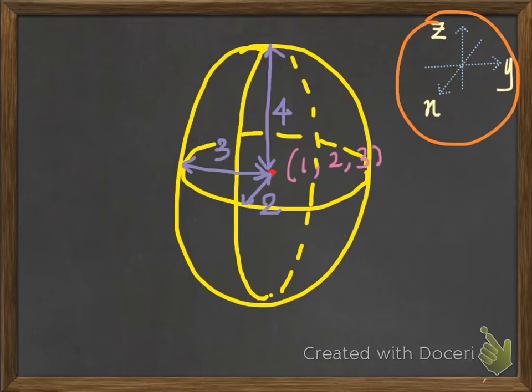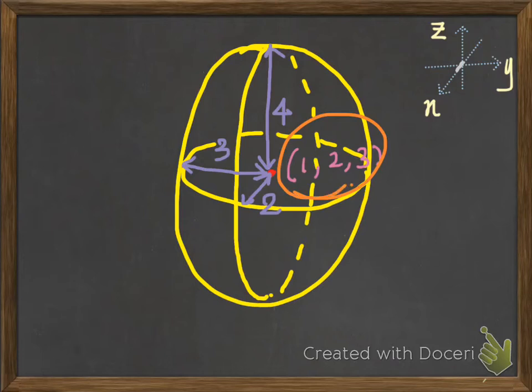So, if we want to locate a point from the origin, what we will do is to move from the origin along the x-axis. Now, we are locating the center. The center is at (1, 2, 3). As you can see from here, it is 1, 2, 3.